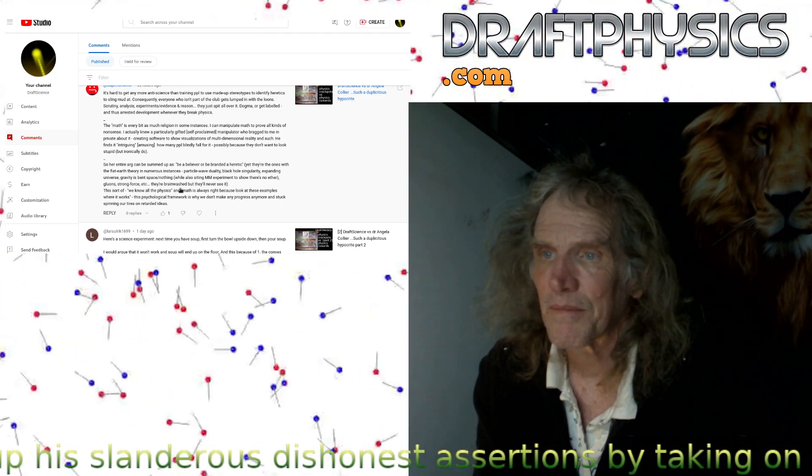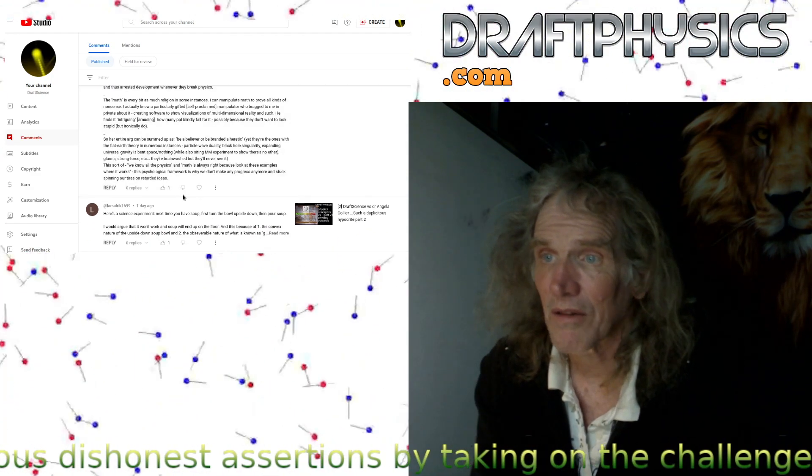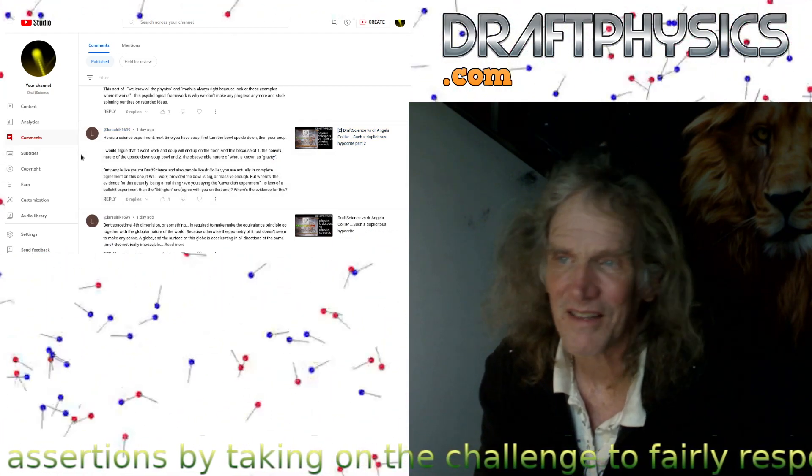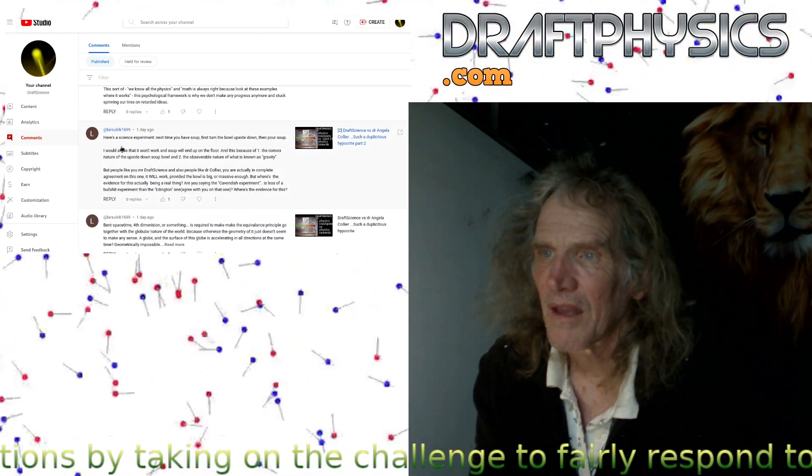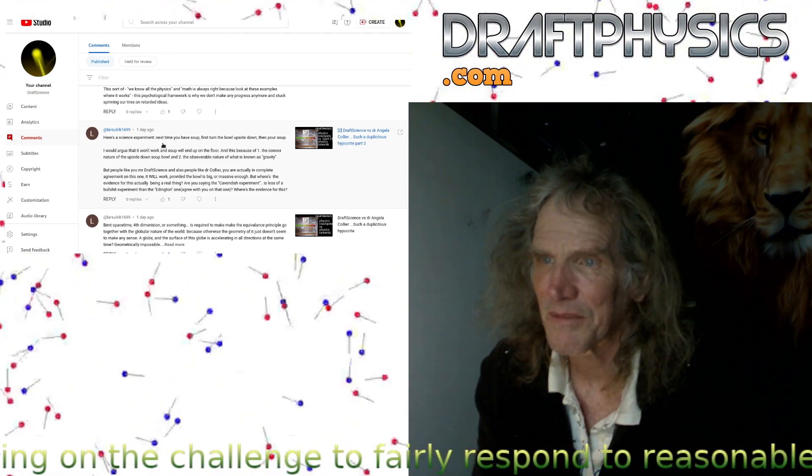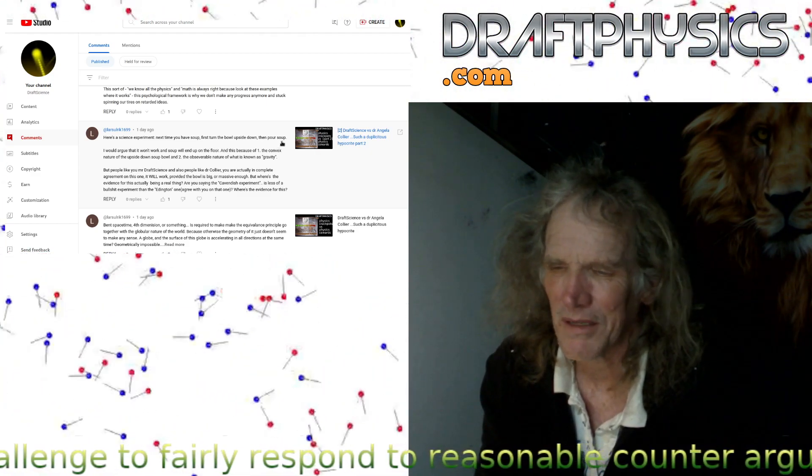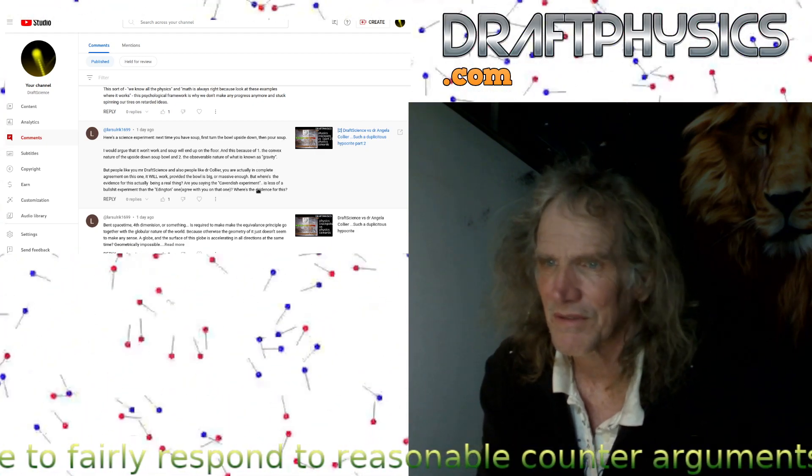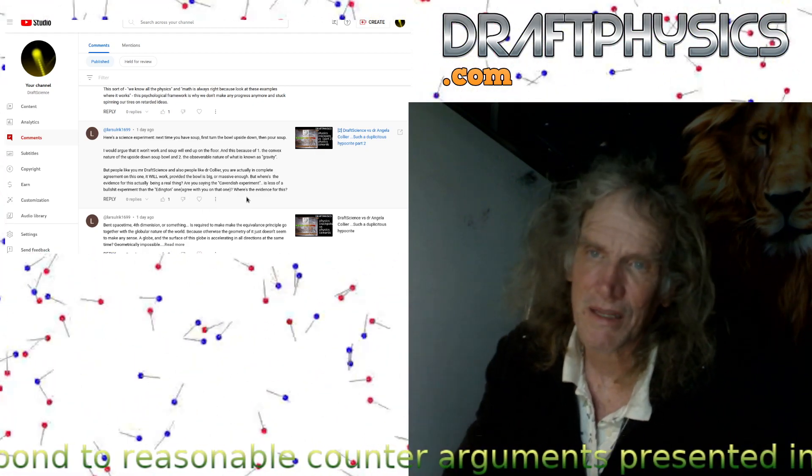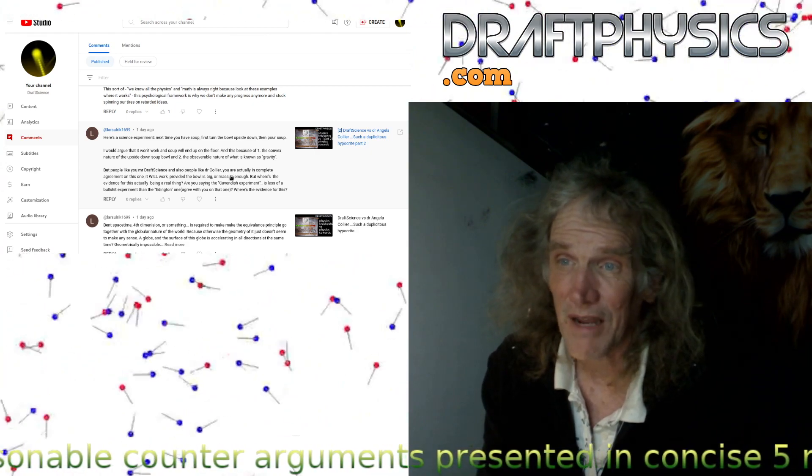Glue on strong force, they're brainwashed, but they'll never see it. Whatever. You kind of lost me at Michelson-Morley. Sorry. No sale, frankly. Let's see, this is the flat earther. So here he says, here's an experiment. Next time you have soup, turn the bowl upside down and pour the soup. He's trying to argue there's no gravity because somehow gravity can't happen on a round surface. It's just insulting the channel not to directly argue my arguments.